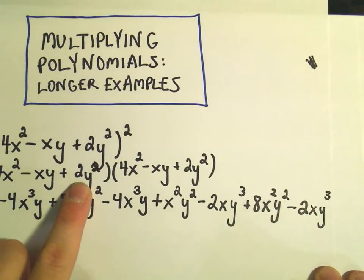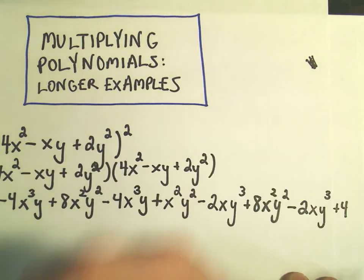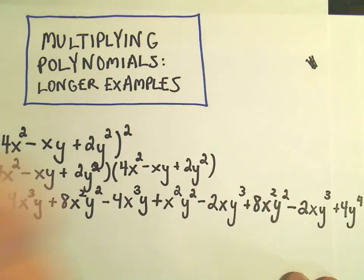And let's see. We have a positive 2y² and a positive 2y². That's going to give us a positive 4. y² and y² will become y to the fourth.